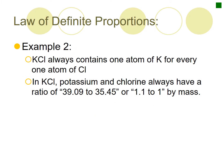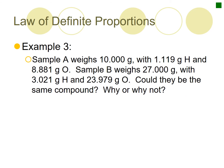KCl is another example. For KCl, it will always have a mass ratio of 39.09 to 35.45 for potassium compared to chlorine, or percentage-wise 1.1 to 1 by mass.